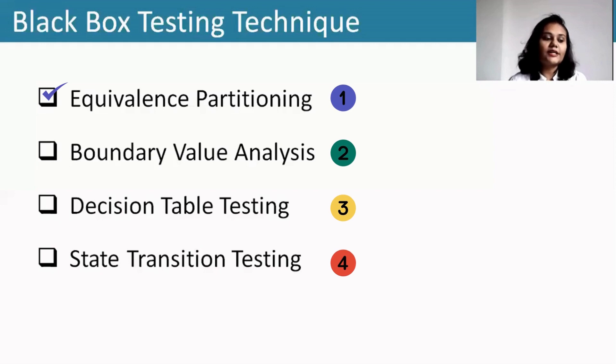The first one is equivalence partitioning, second is boundary value analysis, third is decision table, and fourth is state transition testing.